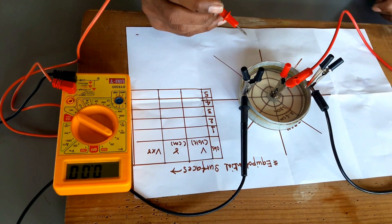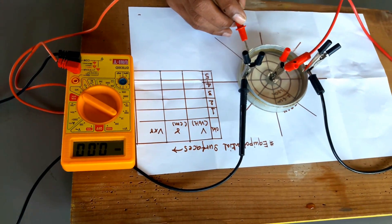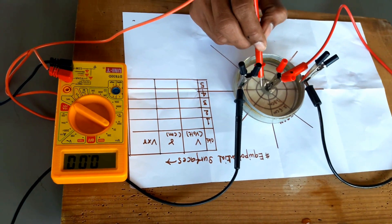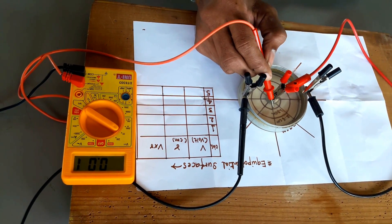Now we will start with our experiment. We have applied voltage and we have drawn some concentric circles.